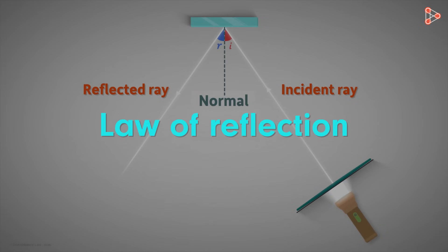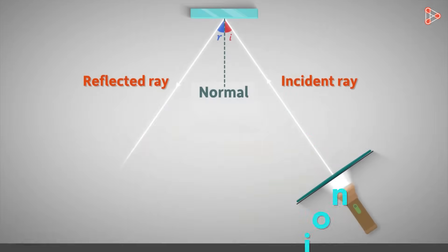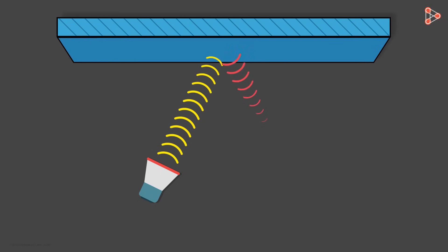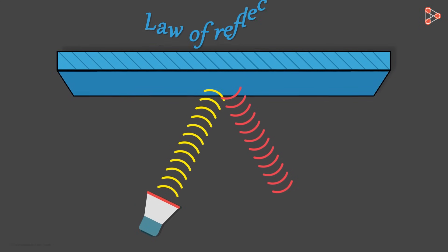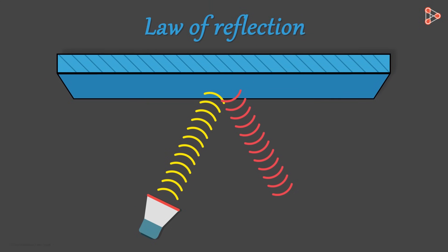From our past videos, we know that light follows law of reflection after being incident on a surface. Just like the light waves, sound waves also get reflected from the surface of a solid. They also follow the same law of reflection. Let us see what that law is.